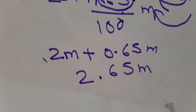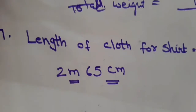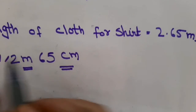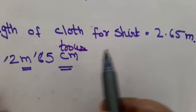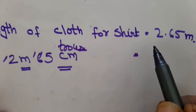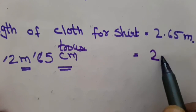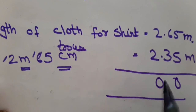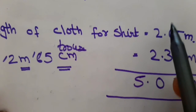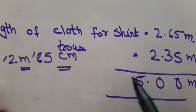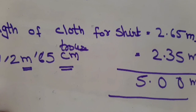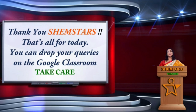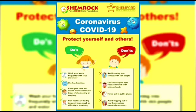The length for the trousers is 2 meters 35 centimeters, which becomes 2.35 meters. These are now like decimals, so you simply add: 5 plus 5 is 10; 1 plus 6 plus 3 is 10; 1 plus 2 plus 2 is 4. Hence Rohan purchased 5 meters of cloth. Now you will complete exercise 6.5. That's all for today, Shamestars. Thank you. You can drop your queries on the Google Classroom.